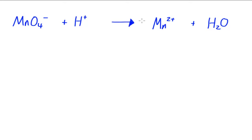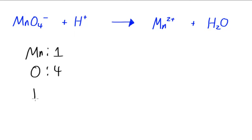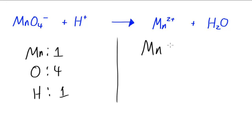So I'm going to balance this. First thing I'm going to do is account for the different atoms present. For manganese, we have one atom on this side, for oxygen we have four atoms on this side, and for hydrogen we have one. On the other side, for manganese we have one, for oxygen we have one, and for hydrogen we have two.